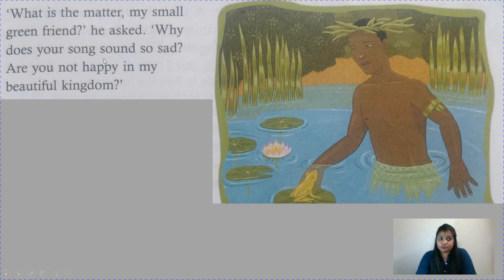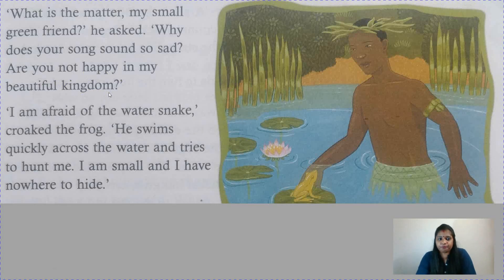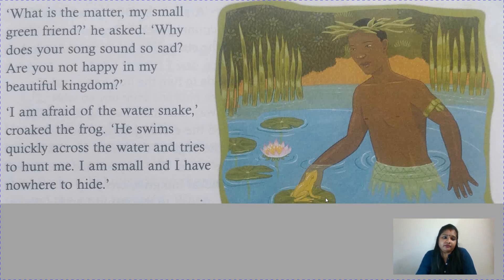What is the matter, my small green friend? he asked. Why does your song sound so sad? Are you not happy in my beautiful kingdom? The frog replied: I'm afraid of the water snake. He swims quickly across the water and tries to hunt me. I'm small and I have nowhere to hide. Snakes are so fast in the water, and the snake tries to hunt him — it is so small, where will it hide?